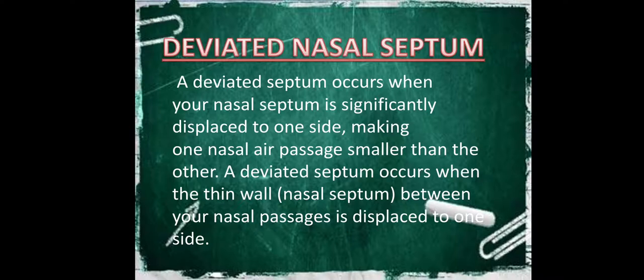That is, in between the nasal passages, displaced to one side. A deviated nasal septum can occur when your nasal septum is significantly displaced to one side. This DNS are frequently found in association with deformity of external nose.